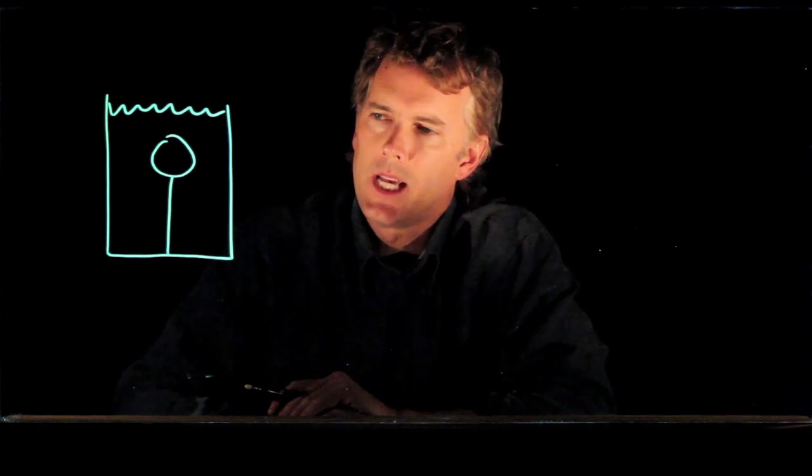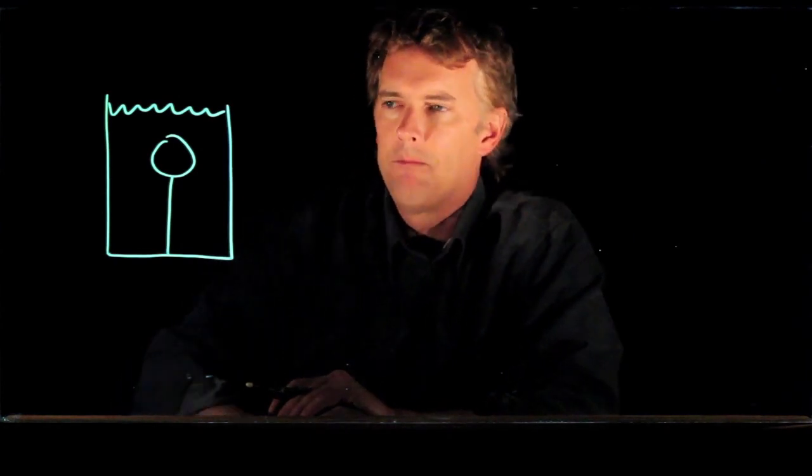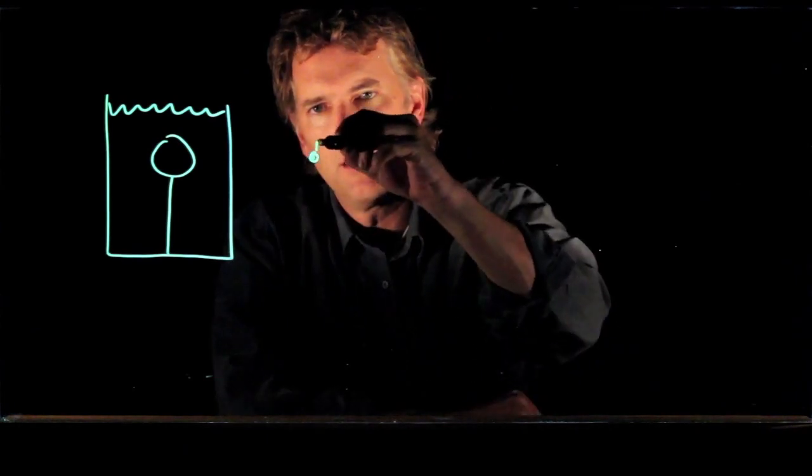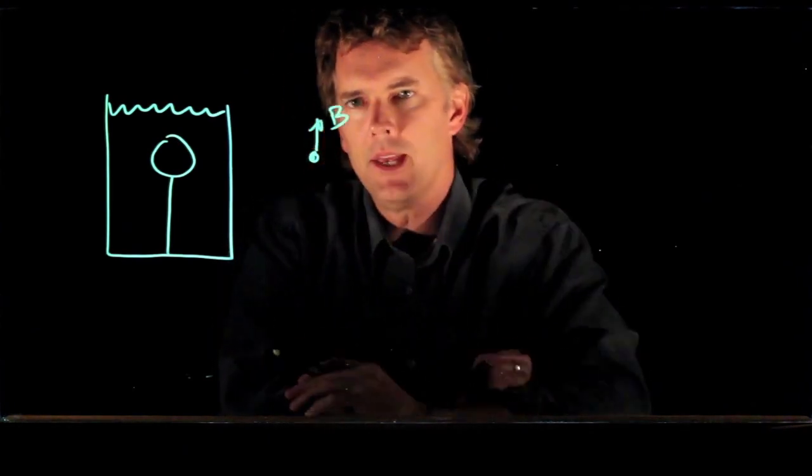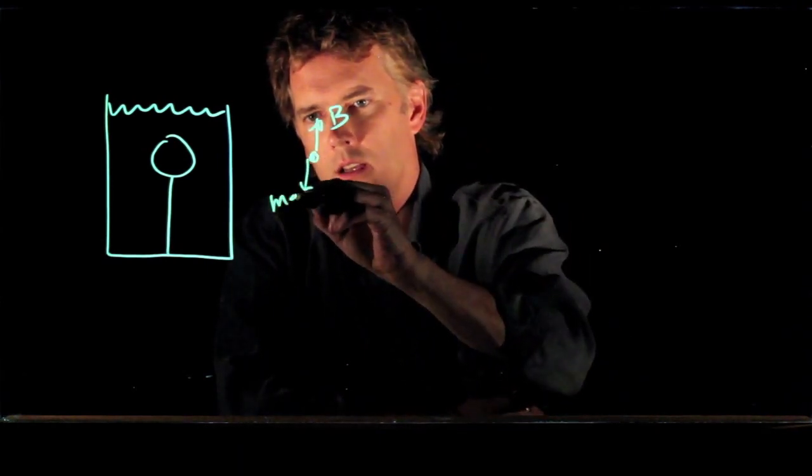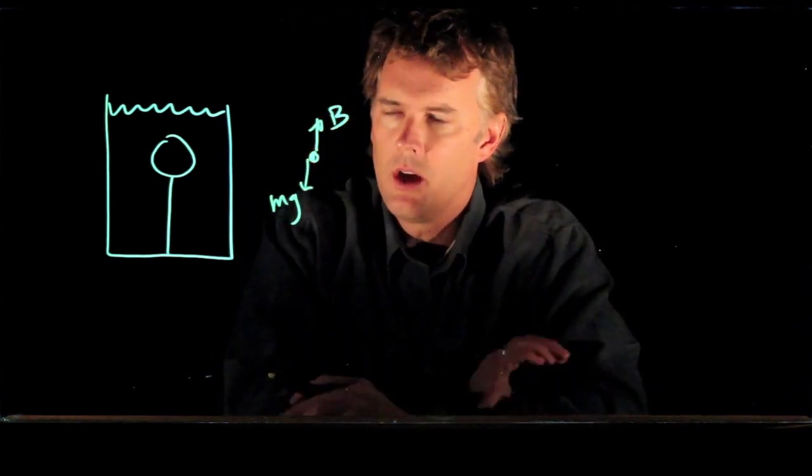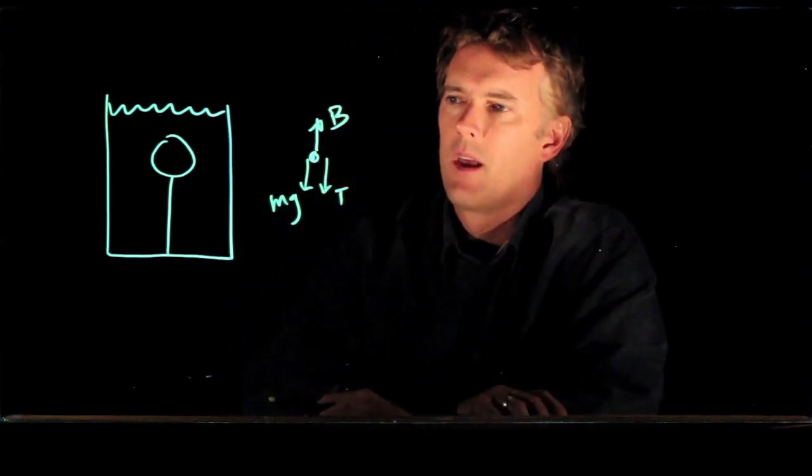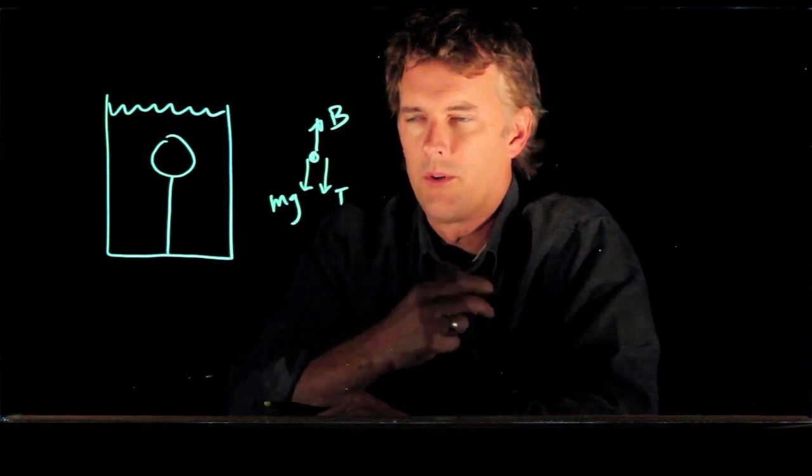All right, so how do we attack this problem? Well, first off, why don't we draw a free body diagram? Here's our object. We have a buoyant force B going up on the object. We of course have gravity going down, mg. And we have tension T in the wire or string also going down.